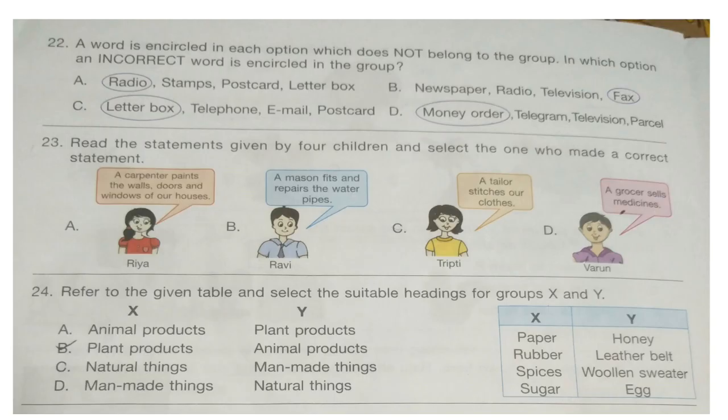Question 22. A word is encircled in each option which does not belong to the group. In which option is an incorrect word encircled in the group?